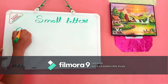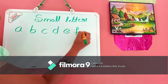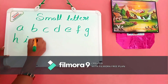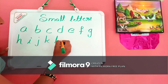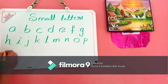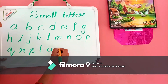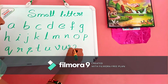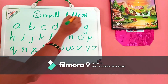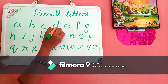A, B, C, D, E, F, G, H, I, J, K, L, M, N, O, P, Q, R, S, T, U, V, X, Y, and Z. These small letters we can say like small a, small b, small c, small d.